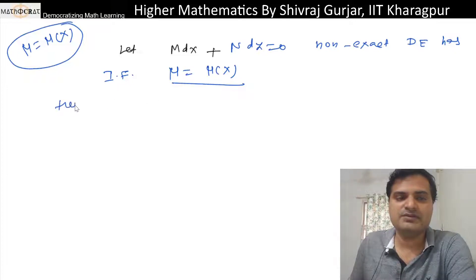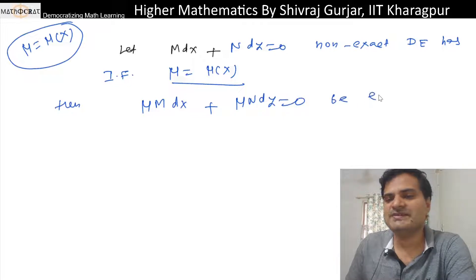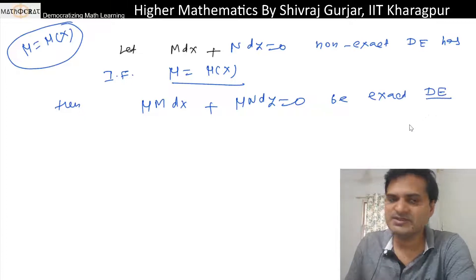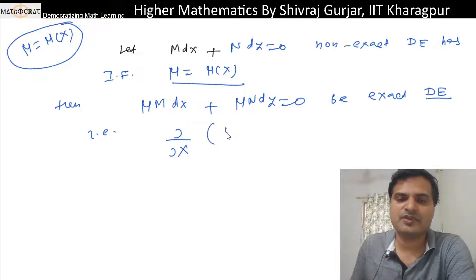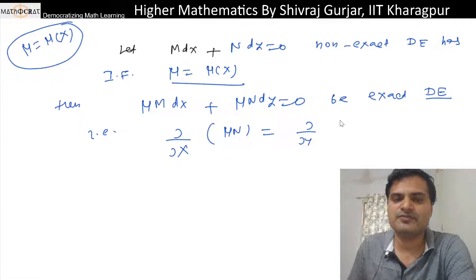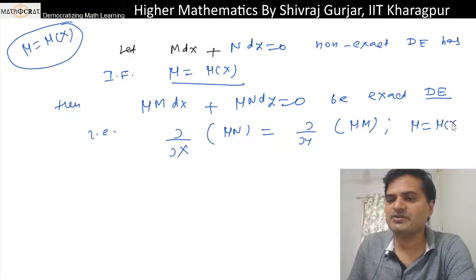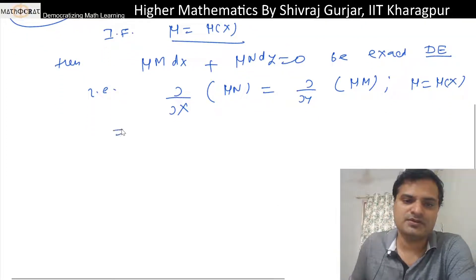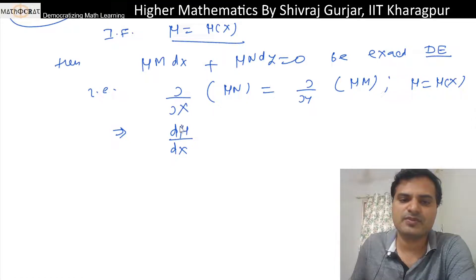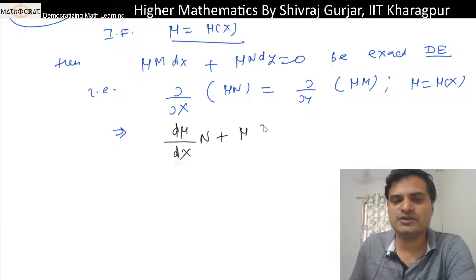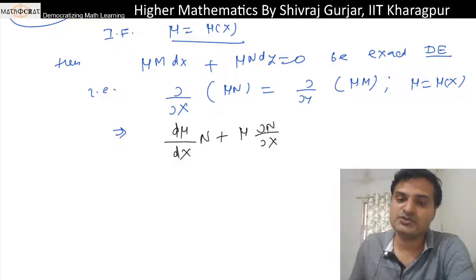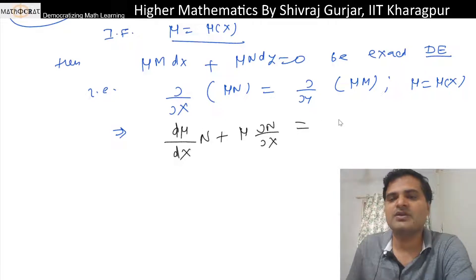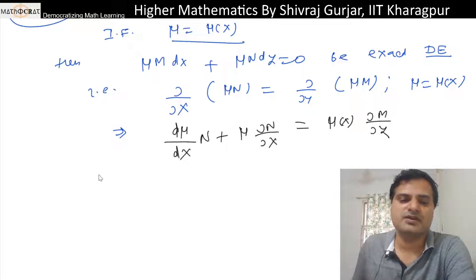Let M dx plus N dy equals zero be a non-exact differential equation with integrating factor mu, which is a function of x only. Then mu*M dx plus mu*N dy equals zero becomes an exact differential equation. The condition for exactness is: del/del(x) of (mu*N) should equal del/del(y) of (mu*M), where mu is a function of x only. Expanding: d(mu)/dx times N plus mu times del(N)/del(x) equals mu times del(M)/del(y).